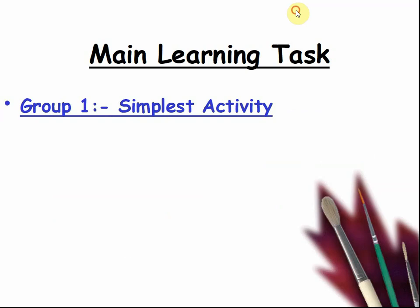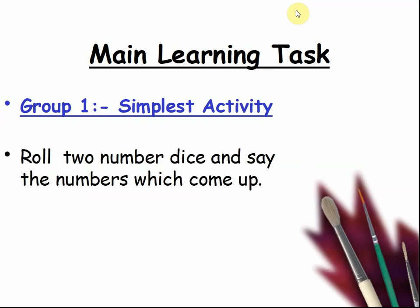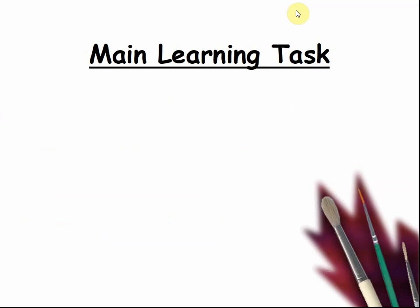Group 1. This is what you will be doing. Roll 2 number dice and save the numbers which come up. Put the larger number first. Then add them.